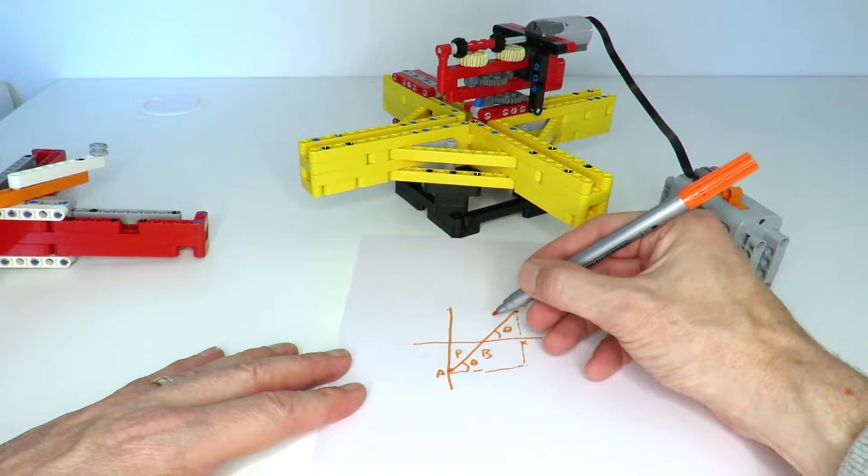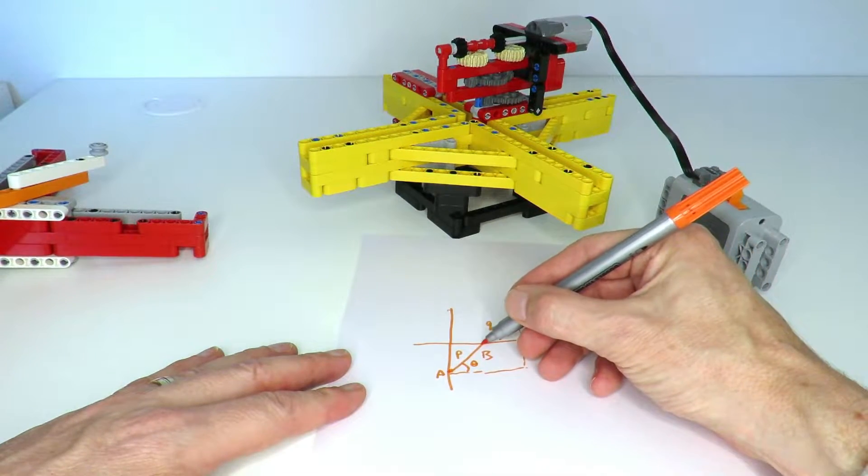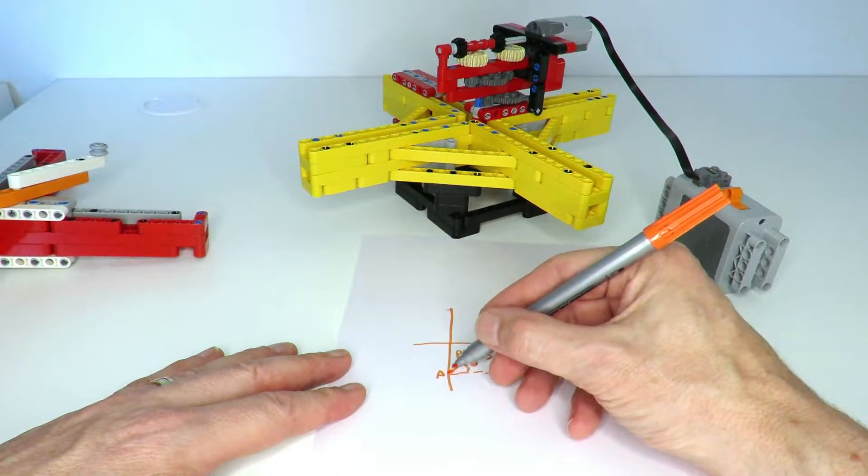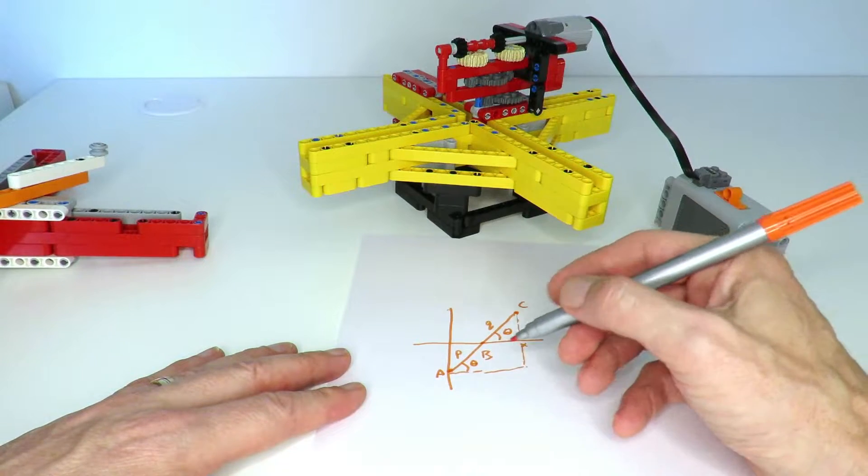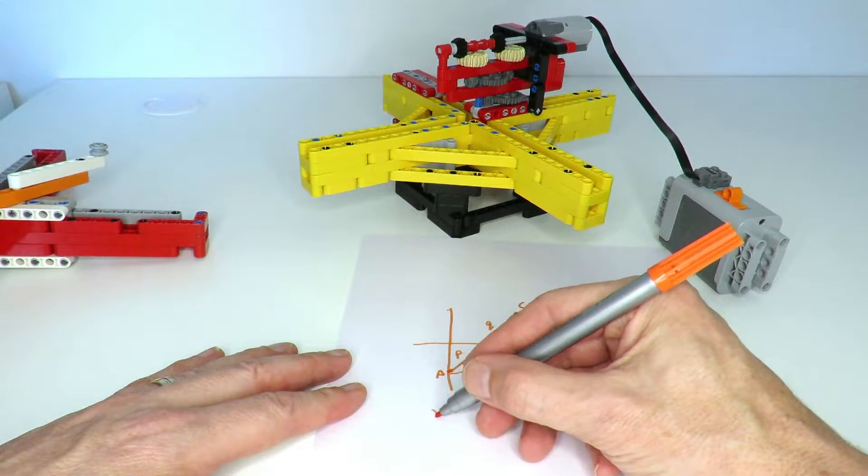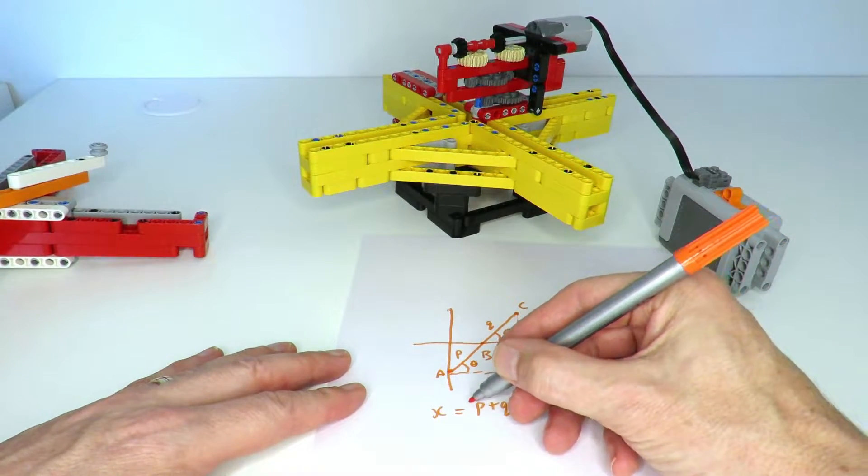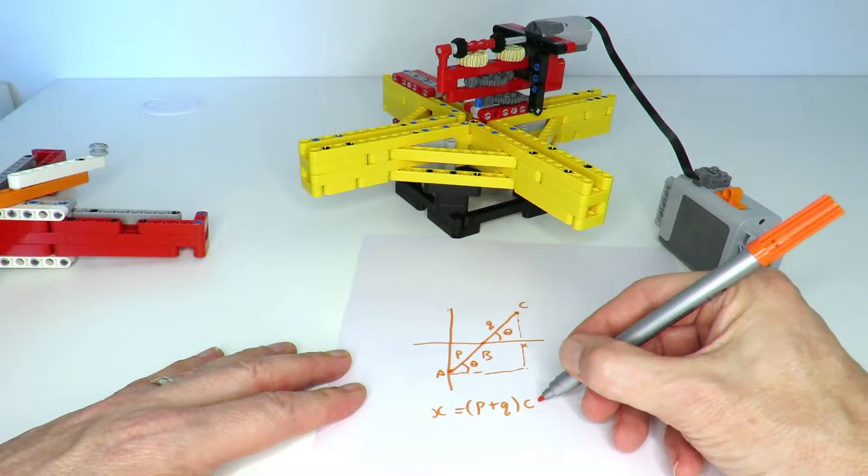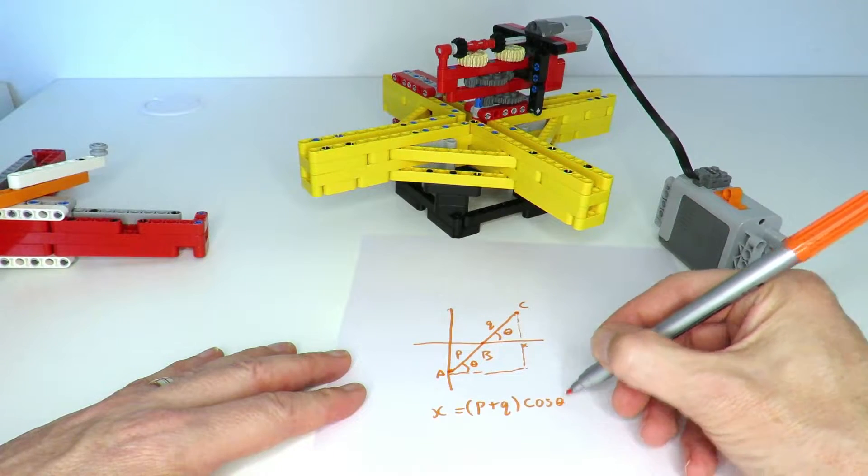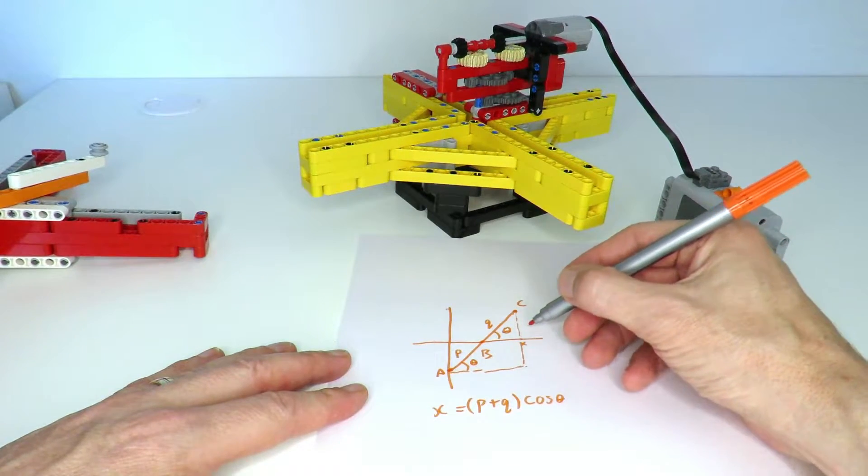If this length here is p and that length there is q, so that's the distance from here to there and p is the distance from there to there, then what we've got is that x is equal to (p + q) times the cos of the angle theta.